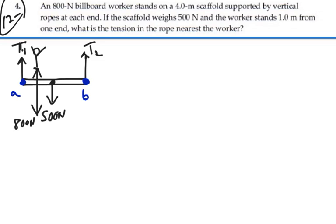Since I want to find T1, and I don't know T1 or T2, maybe what I want to do is select point B as my axis of rotation, and then I eliminate T2 from consideration as far as torques go because its line of action goes right through point B. So now, with that under consideration,